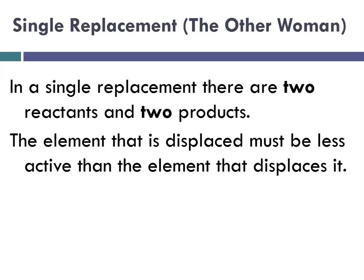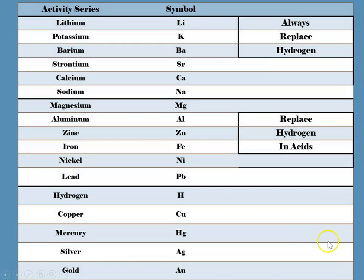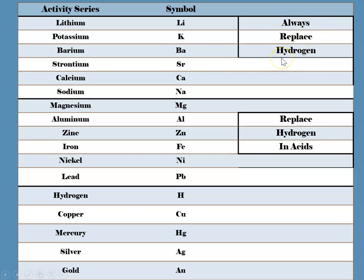We use something called an activity series of elements, and we have two activity series. The one on the next slide is an activity series for metals — the most reactive are at the top and activity decreases toward the bottom. An element can only replace things below it in the activity series. For example, lithium can kick out almost anyone, whereas silver can only displace gold. The activity series also shows which elements can replace hydrogen and which can only do so from acids.